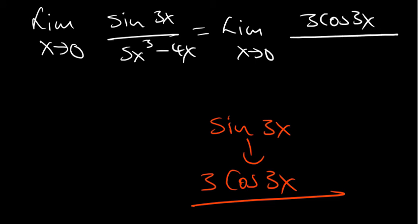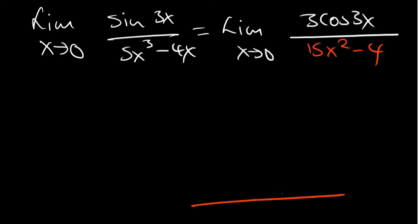And then over... differentiate whatever you have on the bottom. So you're going to have 15x squared minus 4. So that is according to L'Hôpital's rule. We've just differentiated the top part and the denominator. Let's try to substitute now 0.